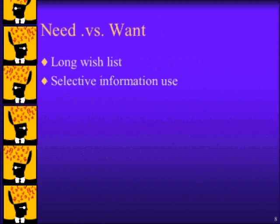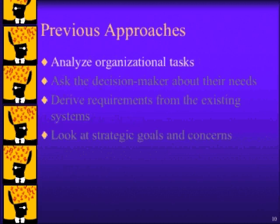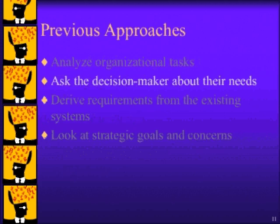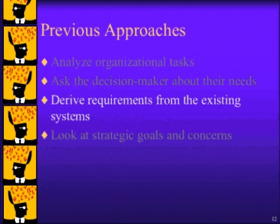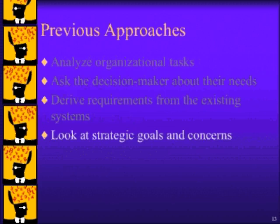So how should we assess information needs so that we avoid these pitfalls? One approach is to analyze organizational tasks and see how information is used in these tasks, often through input or output analysis. This approach does not work well because it does not prepare us for future tasks. Another approach is to ask the decision maker to list their information needs, but this produces long wish lists that are later ignored — not an approach we recommend. Still another approach is to derive requirements from existing systems, which perpetuates existing problems. One can also look at strategic goals and concerns, but this too does not work well because goals do not describe information needs. It helps to know where the organization is going, but we need a lot more specificity than a set of goals.